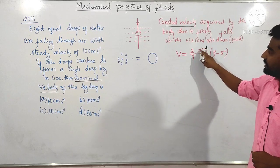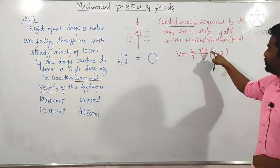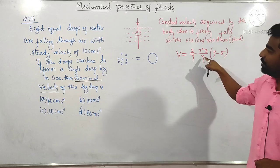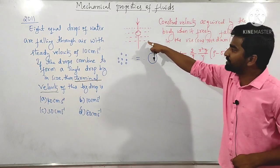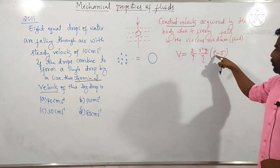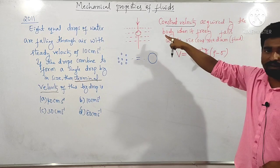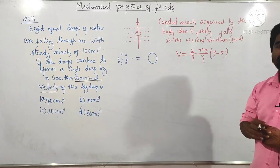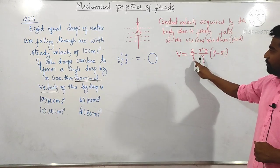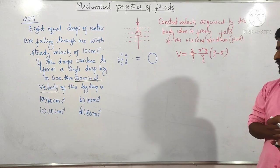Terminal velocity is given by (2/9) × r² × g divided by η, multiplied by (ρ minus σ). Here r is the radius of the spherical body, g is acceleration due to gravity, η is the coefficient of viscosity of the medium, ρ is the density of the spherical body, and σ is the density of the liquid.